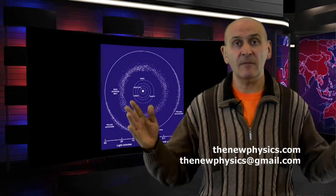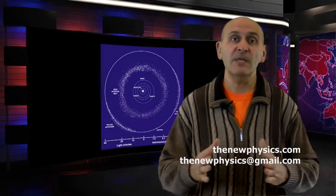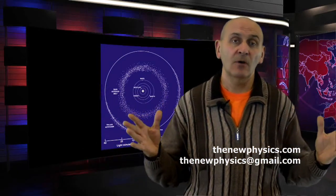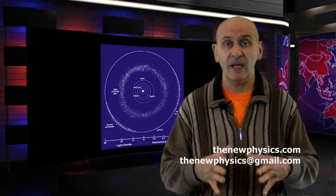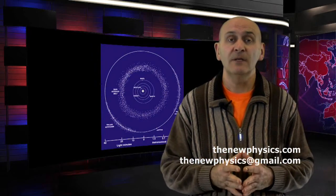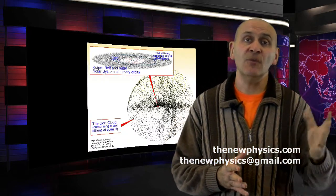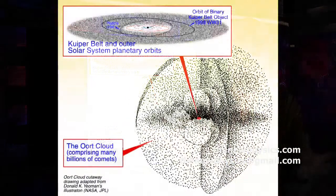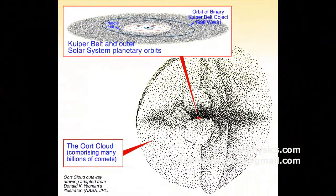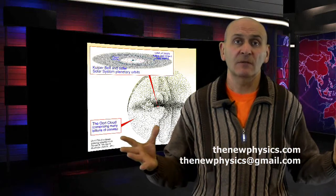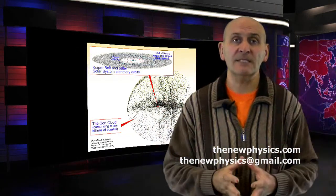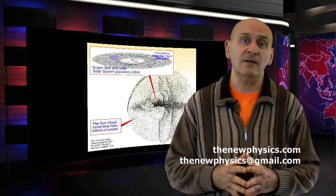But even when we move further, beyond the orbit of Pluto, we are facing a huge asteroid belt, donut shape, which we named Kuiper belt. And even if it is huge, it's immensely small, comparing to the Oort cloud, which is really huge, covering all the solar system in one sphere of asteroids.